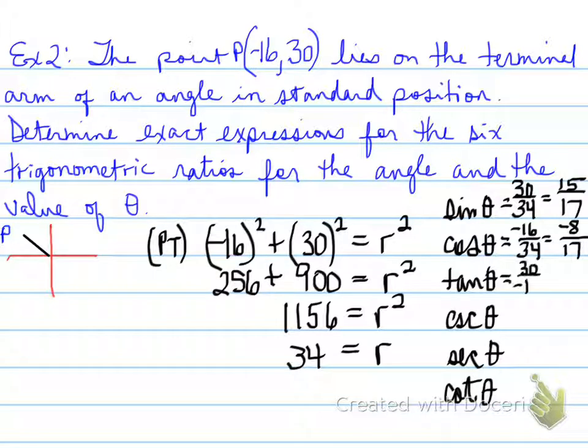Tan theta equals 30 over negative 16, which reduces to negative 15 over 8. Even though the 30 didn't have the negative, when you reduce it, the negative automatically floats to the numerator of any fraction. Cosecant theta equals the flip of sine, which is 17 over 15. Secant theta equals negative 17 over 8. And finally cotangent theta equals negative 8 over 15. So those are the six trigonometric ratios.